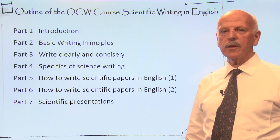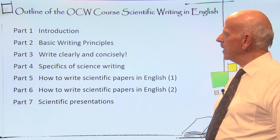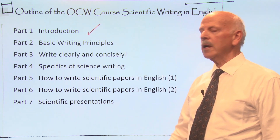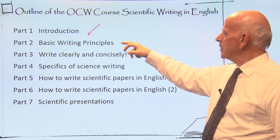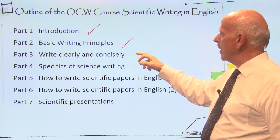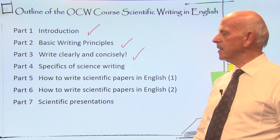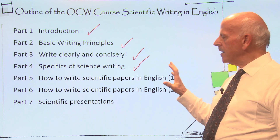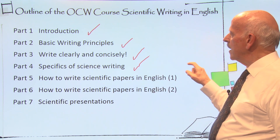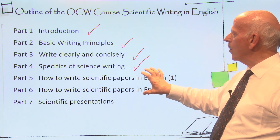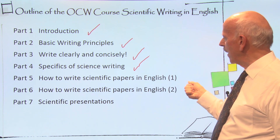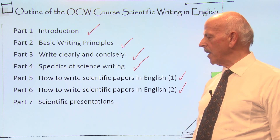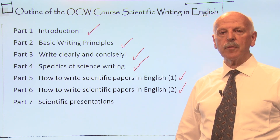Turning our attention to the OCW course, here is the outline. It is divided into seven parts. The first is the introduction, which you're looking at now. Part two is basic writing principles. Part three, how to write clearly and concisely — many tips. And specifics of science writing. The writing of scientific papers is divided into parts four and six, which is the core of this OCW course. Part seven covers tips on scientific presentations, based on many years of studying and listening to students giving presentations.